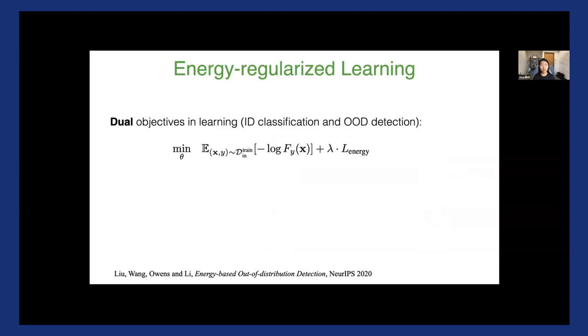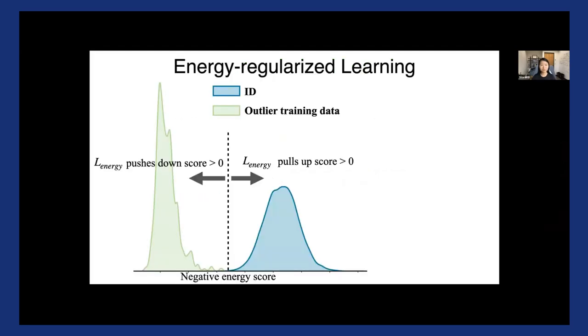And to do so, we advocate for this dual objectives and learning, which is a combination of the standard cross-entropy loss, which tries to classify the ID data. And additionally, we have this uncertainty regularization term, L-energy, that tries to separate ID versus OOD data. And so the right-hand side is, so the second term is the new thing here. So now let's zoom into this regularization term, L-energy.